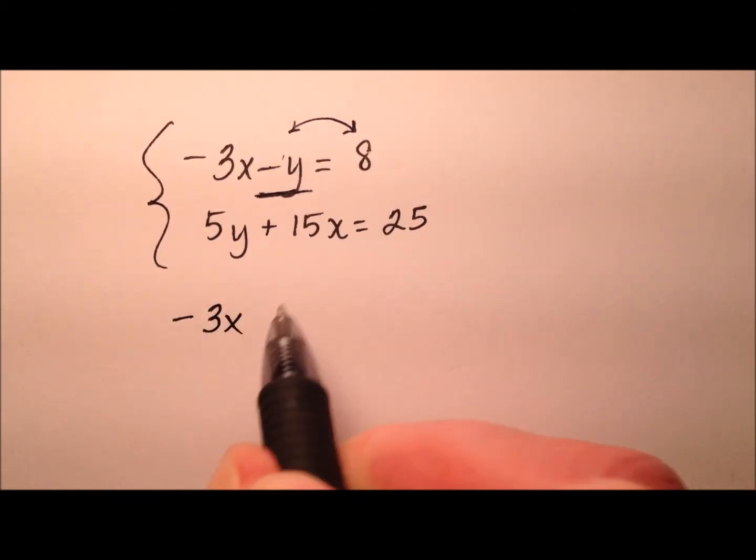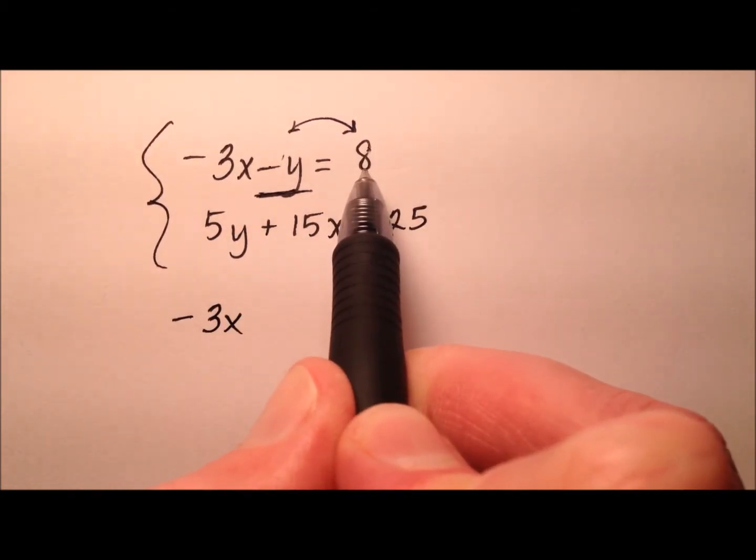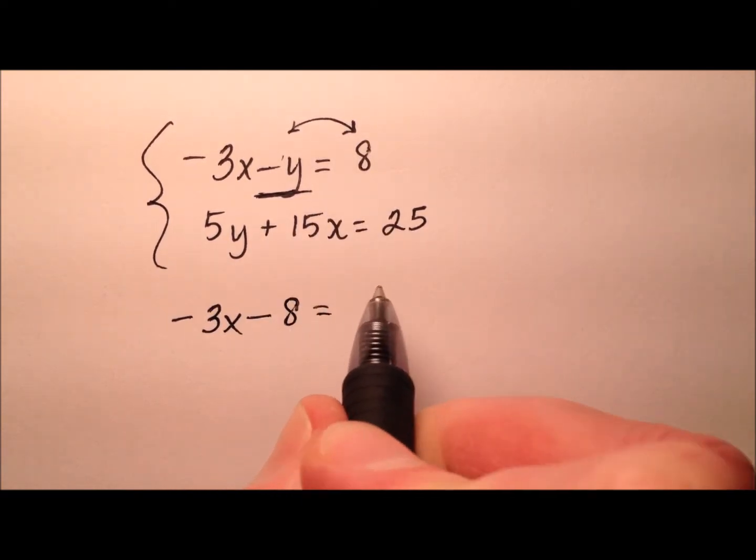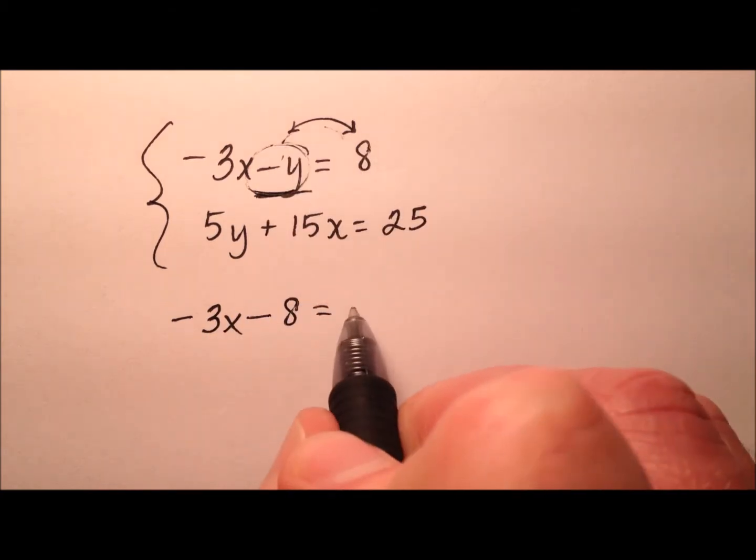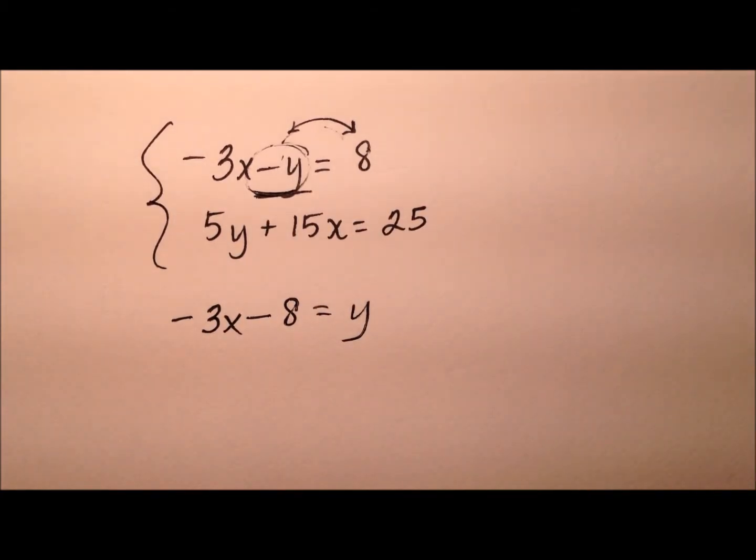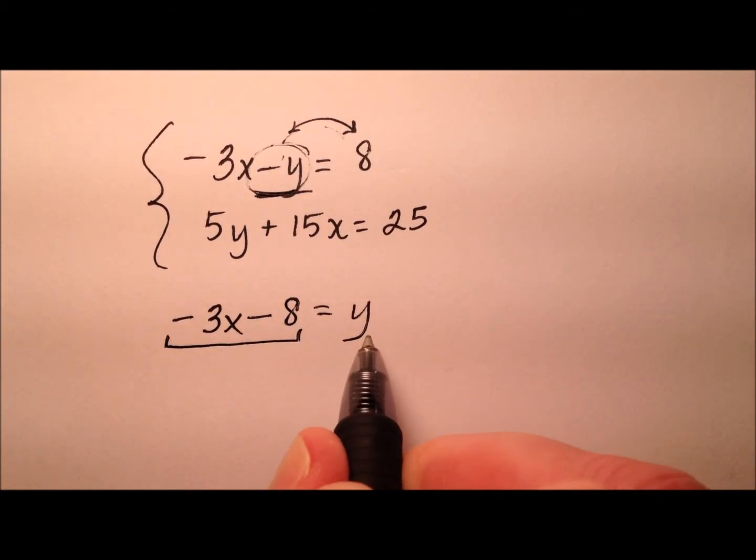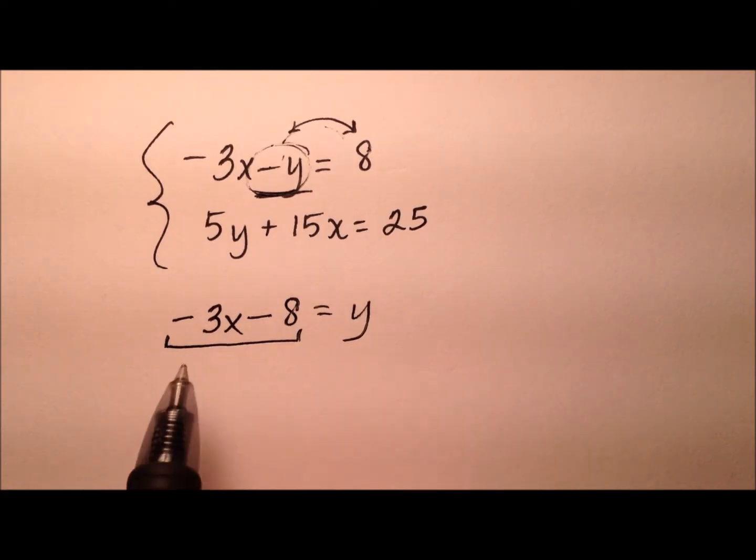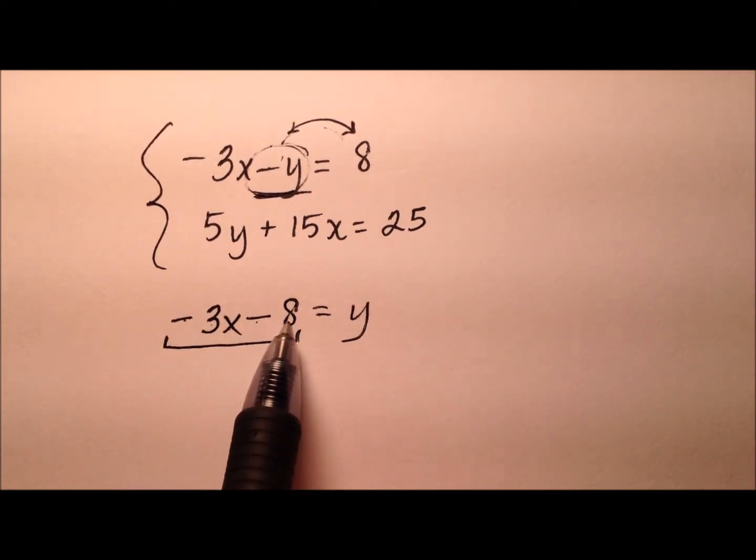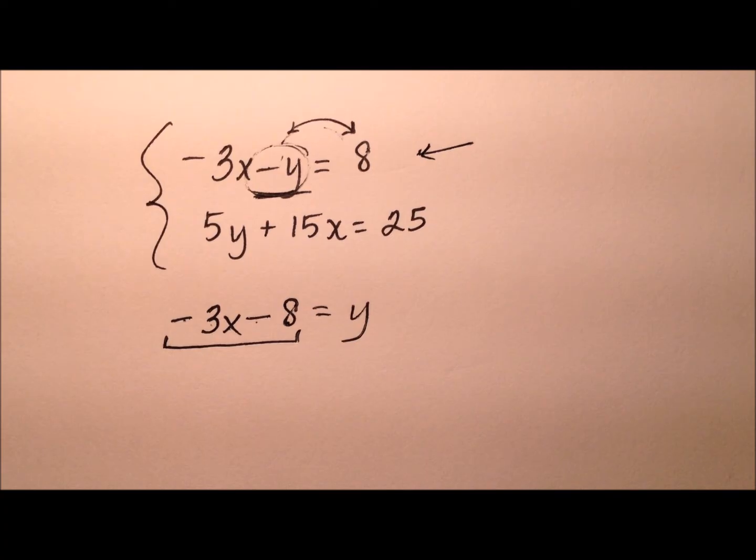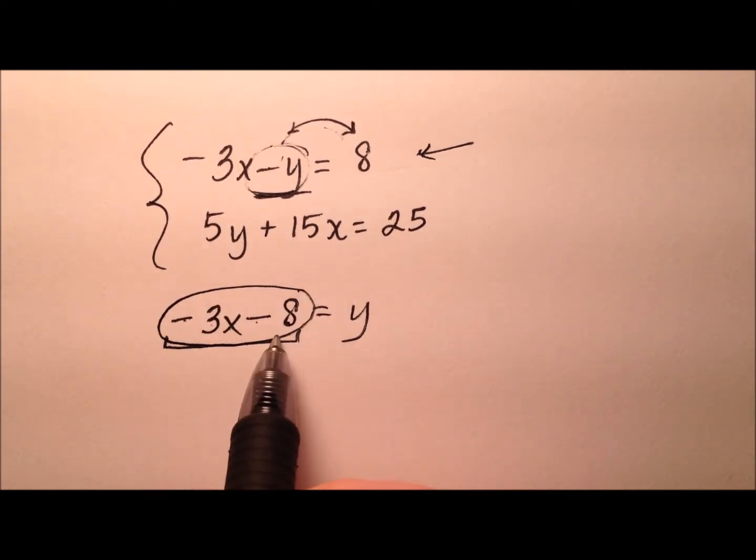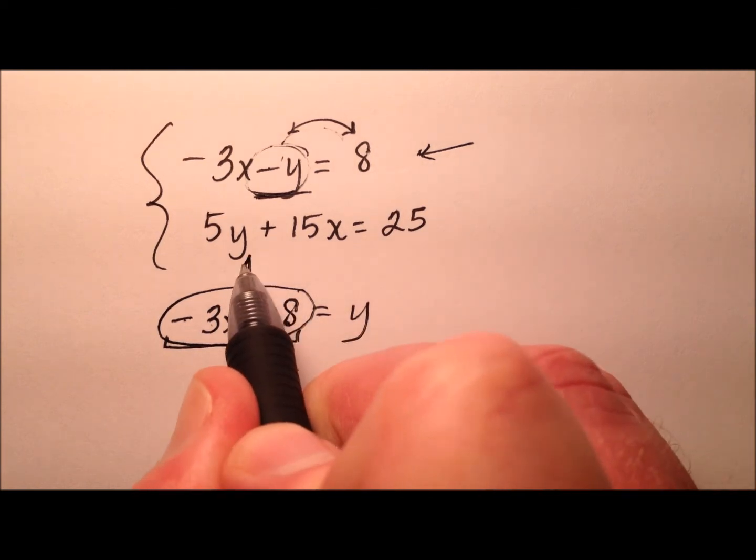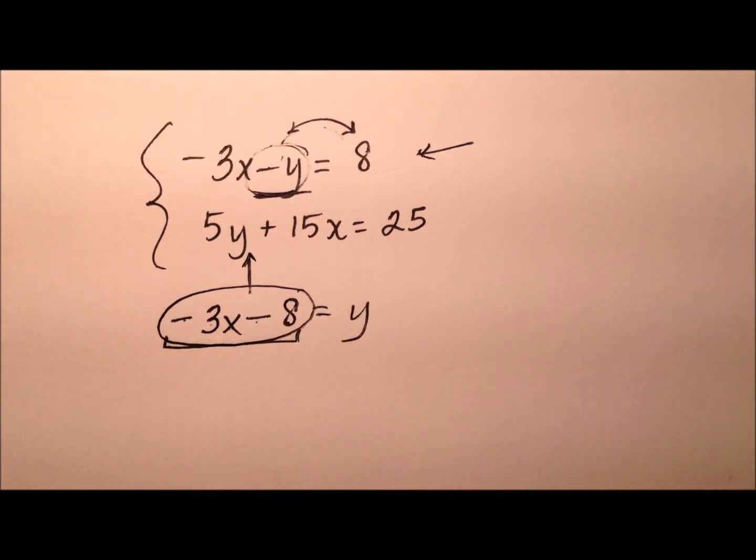So what I'm going to do is just swap these two terms. So when I do that, the 8 that's positive on the right side becomes negative on the left side. And this negative y that was on the left becomes positive y on the right. So now I know that y is equivalent to this expression, negative 3x minus 8. And I got that from the first equation. So I'm going to go ahead and substitute this expression, negative 3x minus 8, into y, but of course in the other equation.